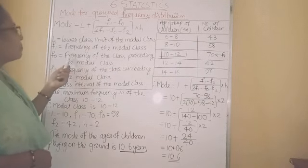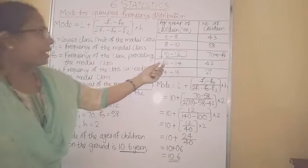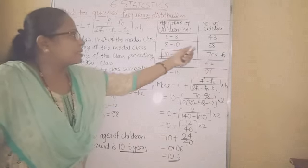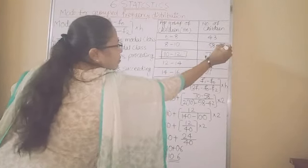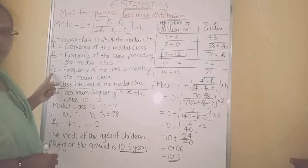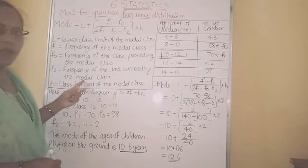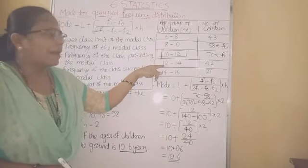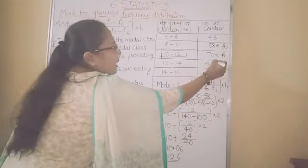F0 is the frequency of the class preceding the modal class. The modal class is 10 to 12, so its preceding class is 8 to 10. The frequency of this class is 58, which is the value of F0. F2 is the frequency of the class succeeding the modal class. The modal class's succeeding class is 12 to 14, and its frequency is 42, so F2 is equal to 42.